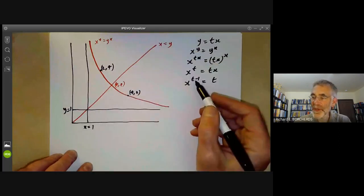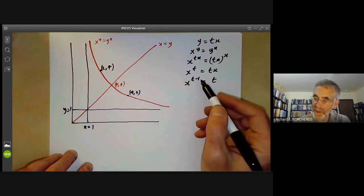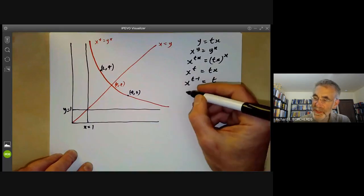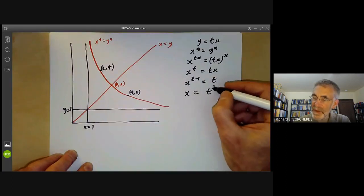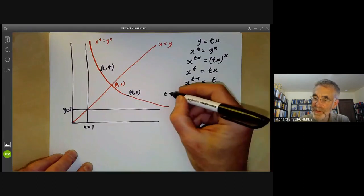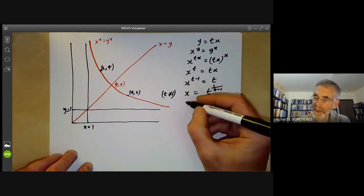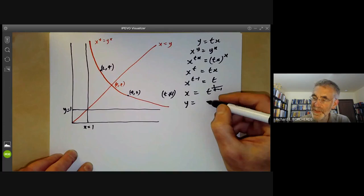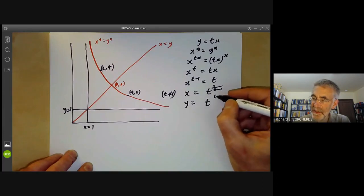If t is not equal to 1, we can take the t minus 1 through to both sides. So we get x is equal to t to 1 over t minus 1. This is for t not equal to 1. And y is equal to t times this, which is equal to t to the t over t minus 1.